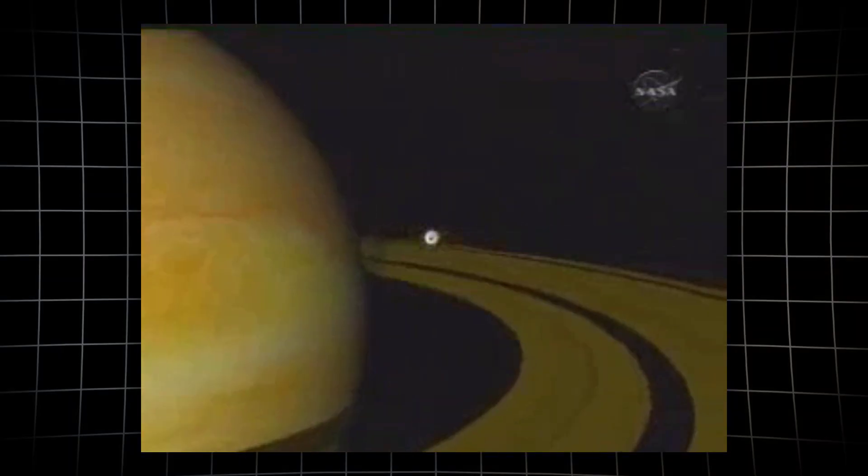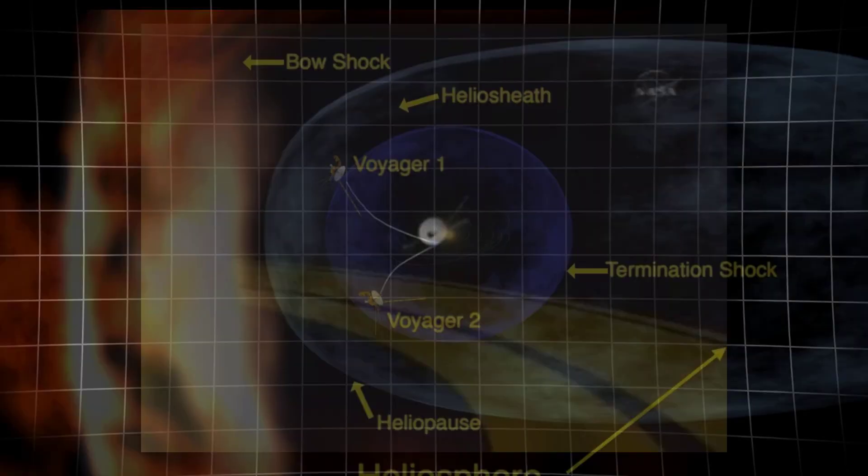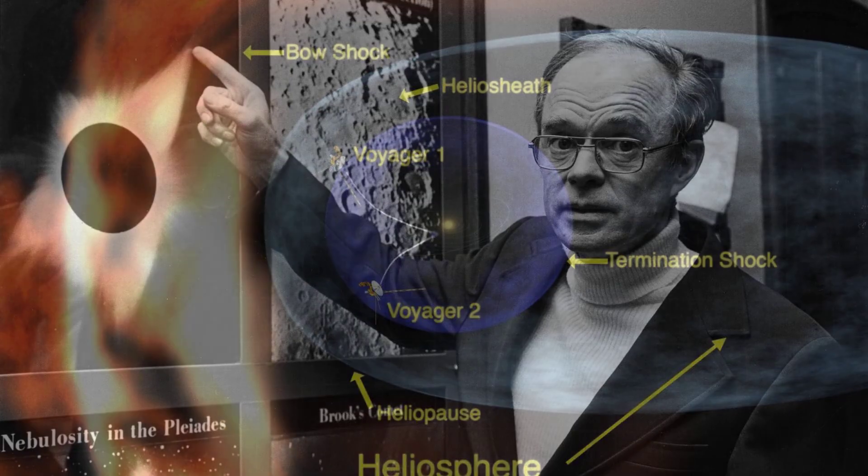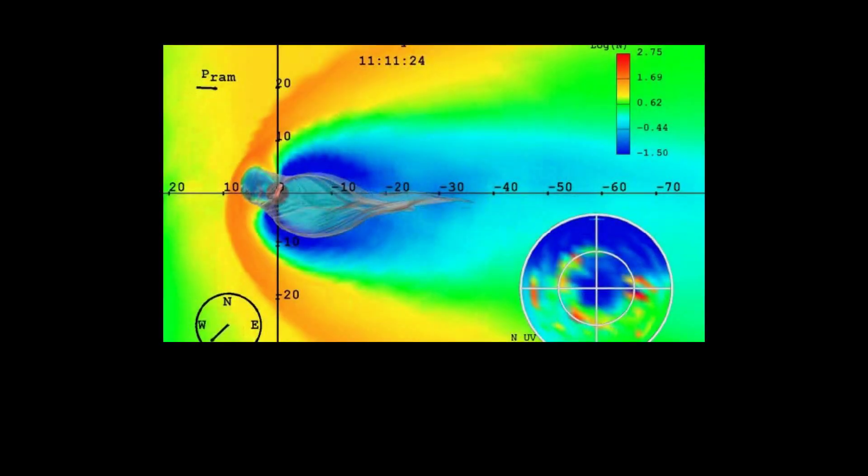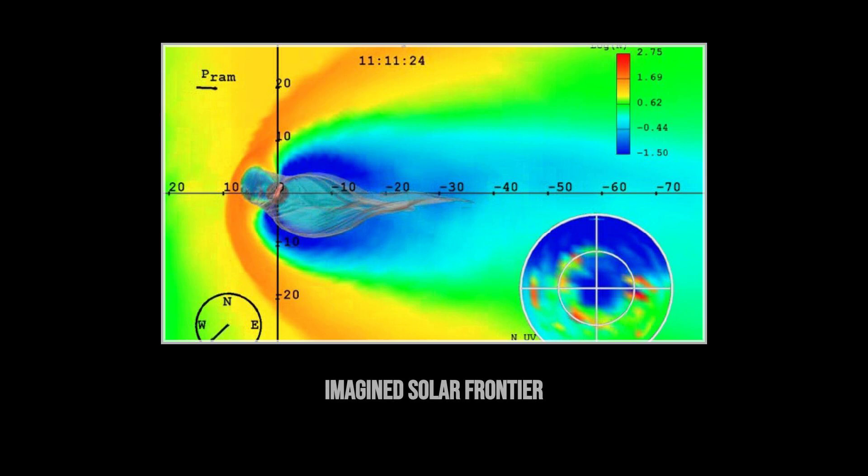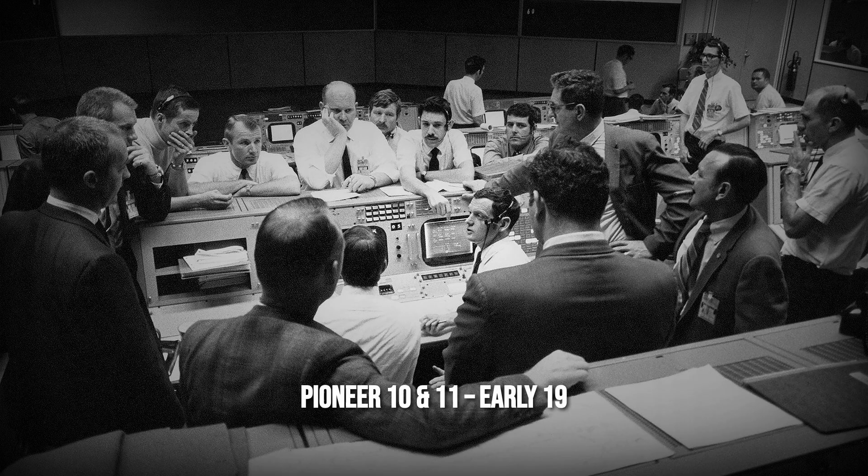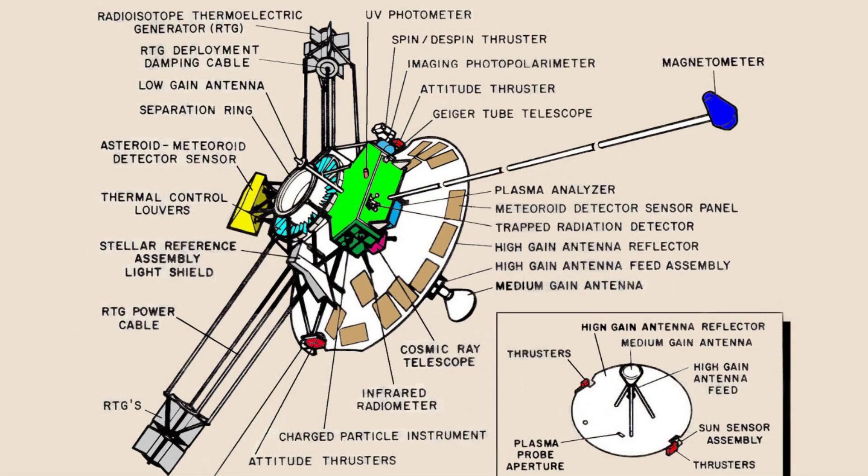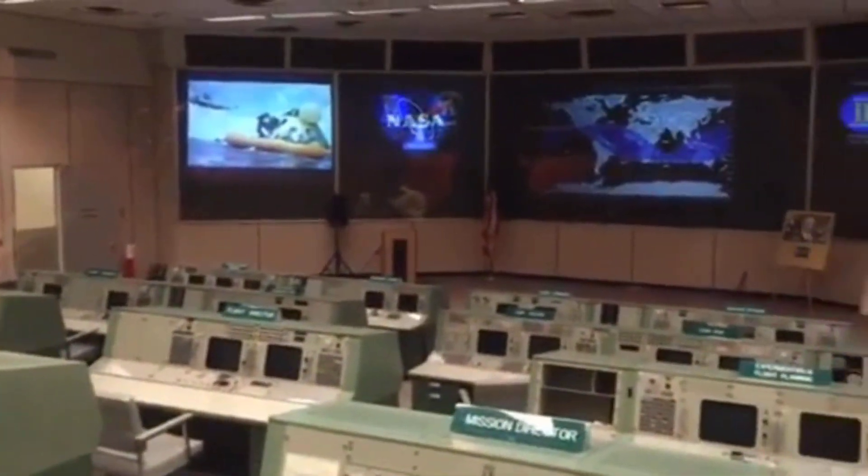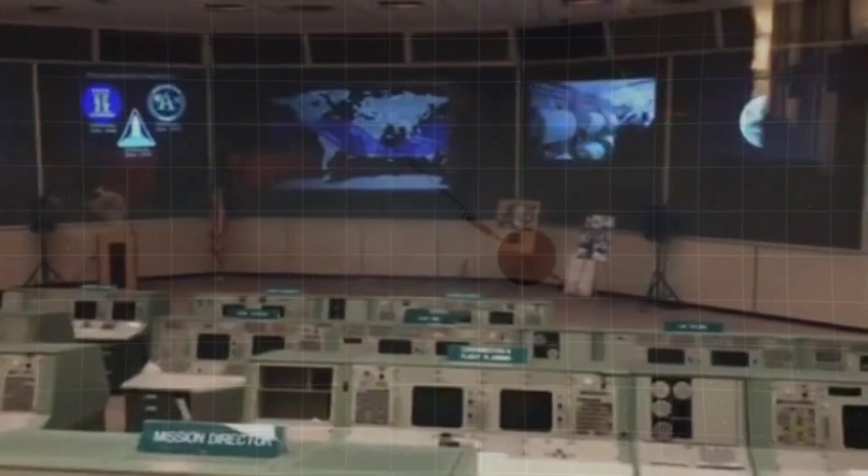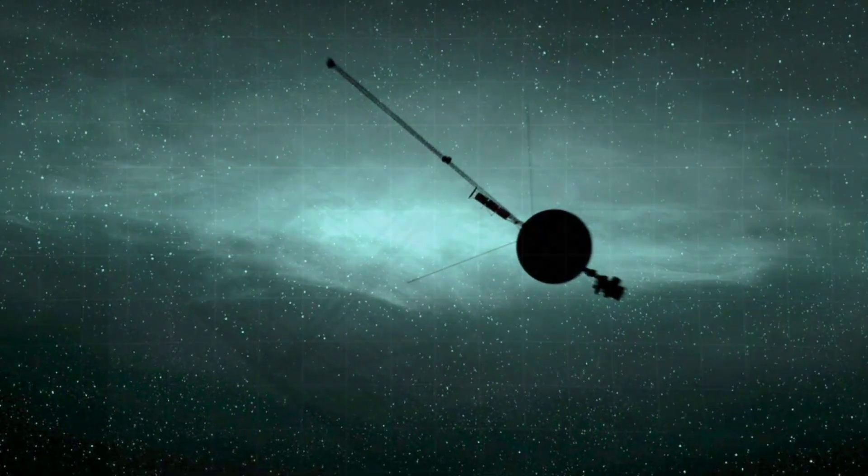Long before Voyager crossed into interstellar space, the edge of the solar system was a place of speculation and rough sketches. Early heliophysicists pictured the Sun's domain as a simple, smooth bubble, its boundary a distant, cold horizon where solar wind faded quietly into the galaxy. The Pioneer 10 and 11 missions in the 1970s nudged at this mystery, sending back hints of turbulence and strange particle readings as they ventured outward. But their instruments, limited by the technology and power of the era, could not resolve what lay beyond. The data was patchy, the signals ambiguous, and as Pioneer's transmitters weakened, the final approach to the boundary slipped from view. With only these fragments, scientists turned to computer simulations and theoretical models.